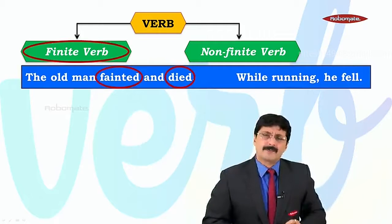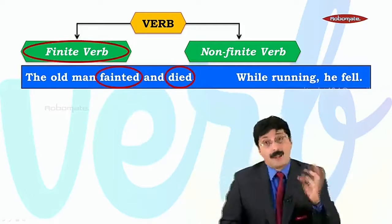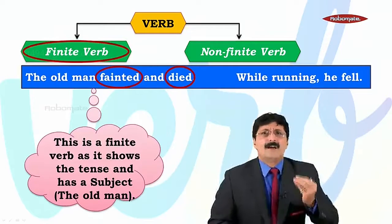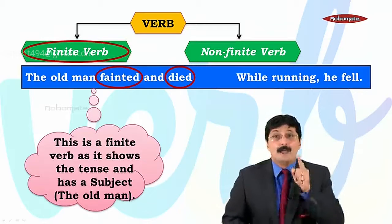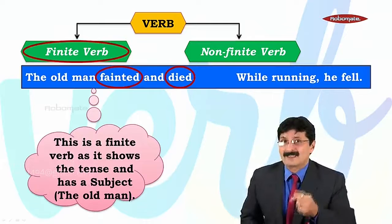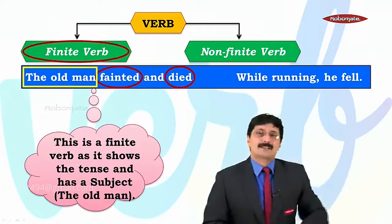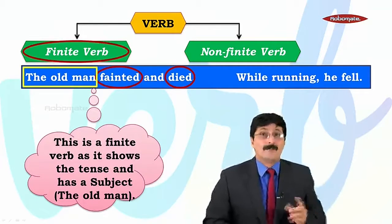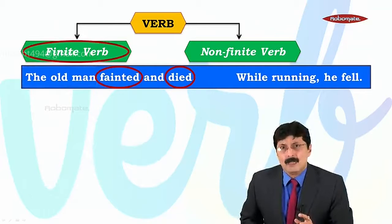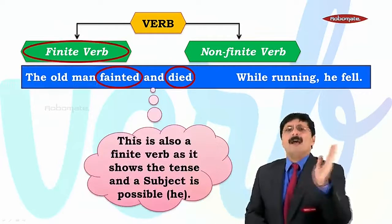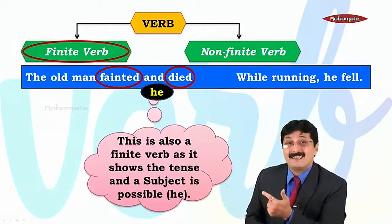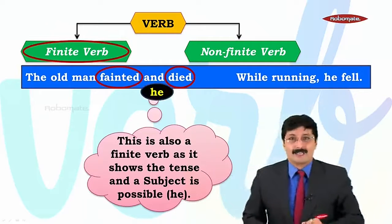Which is the finite verb? Or are both these verbs finite? Let's find out — very, very simple. Fainted is a finite verb because 'man' is the subject. Who fainted? The man fainted. We know subject is the noun or pronoun before the verb in an assertive sentence. Died — is that also a finite verb? Yes, it is, my dear friends, because the subject 'he' is possible before 'died'.